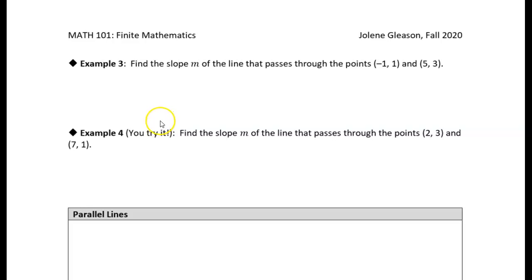All right, in these two examples, we're just given two points and we want to find the slope of a line that passes through them. So really these are identical examples. One for me, one for you. All right, so let's do this.